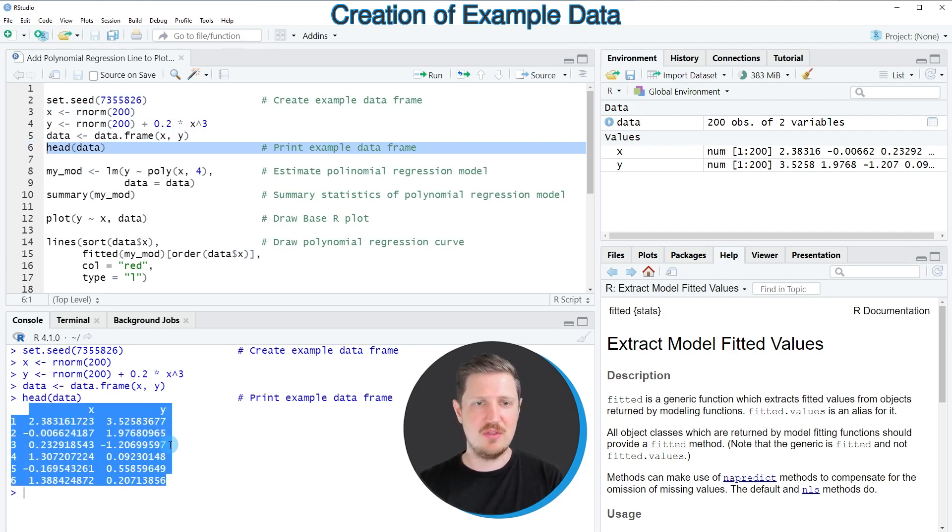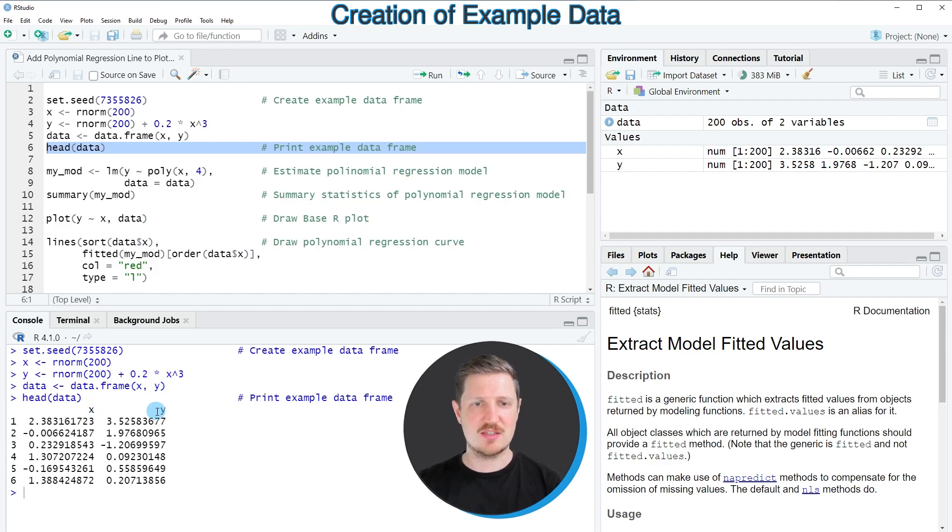And then you can see at the bottom in the R studio console that our data frame contains two columns x and y and both of these columns contain random numeric values.